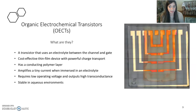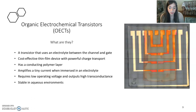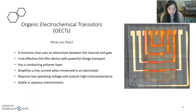What exactly is an OECT? An OECT is a transistor quite similar to field effect transistors, except it uses an electrolyte between the channel and gate as opposed to a conventional dielectric with dipoles. It is a cost-effective thin film device with powerful charge transport, and it also has a conducting polymer layer which facilitates the modulation of channel conductivity.